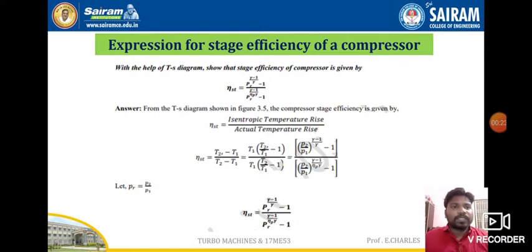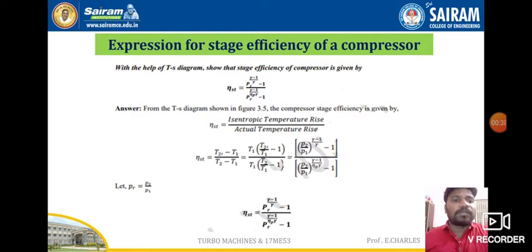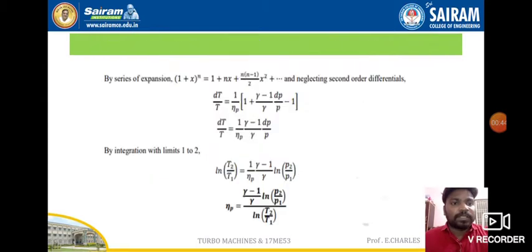The compressor static efficiency is equal to p raised to the power of (gamma minus 1) by gamma, divided by pr raised to the power of (gamma minus 1) by efficiency of p, into (gamma minus 1). We will now look at the efficiency diagram.